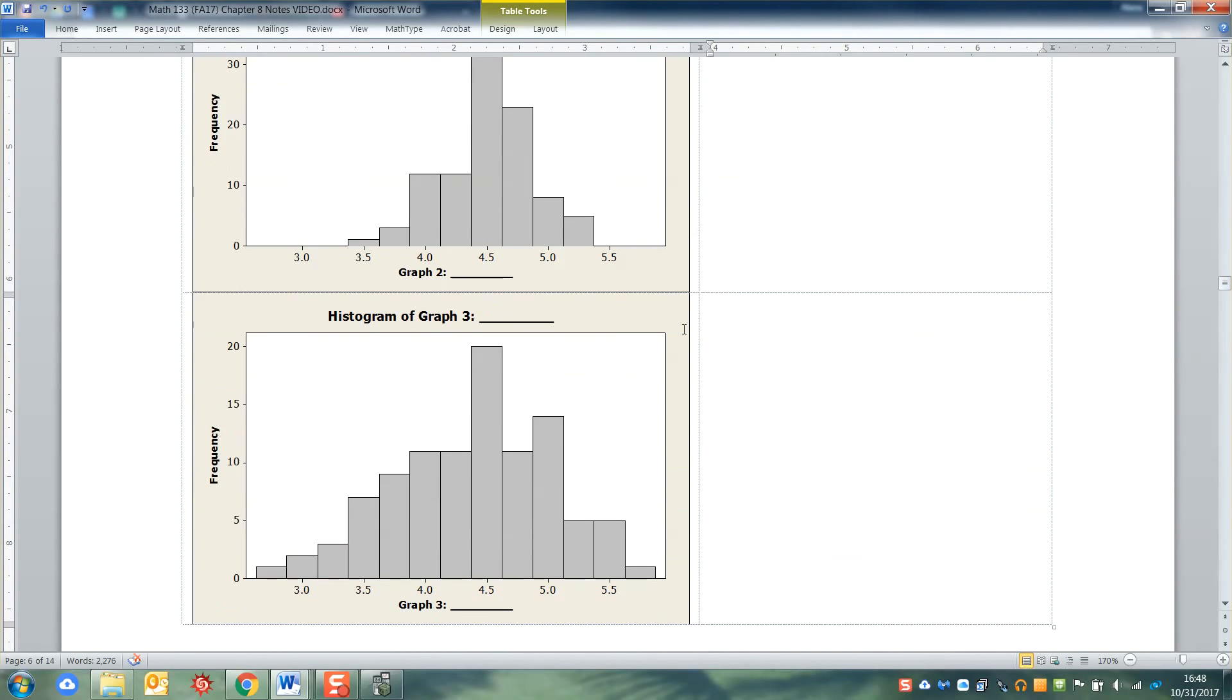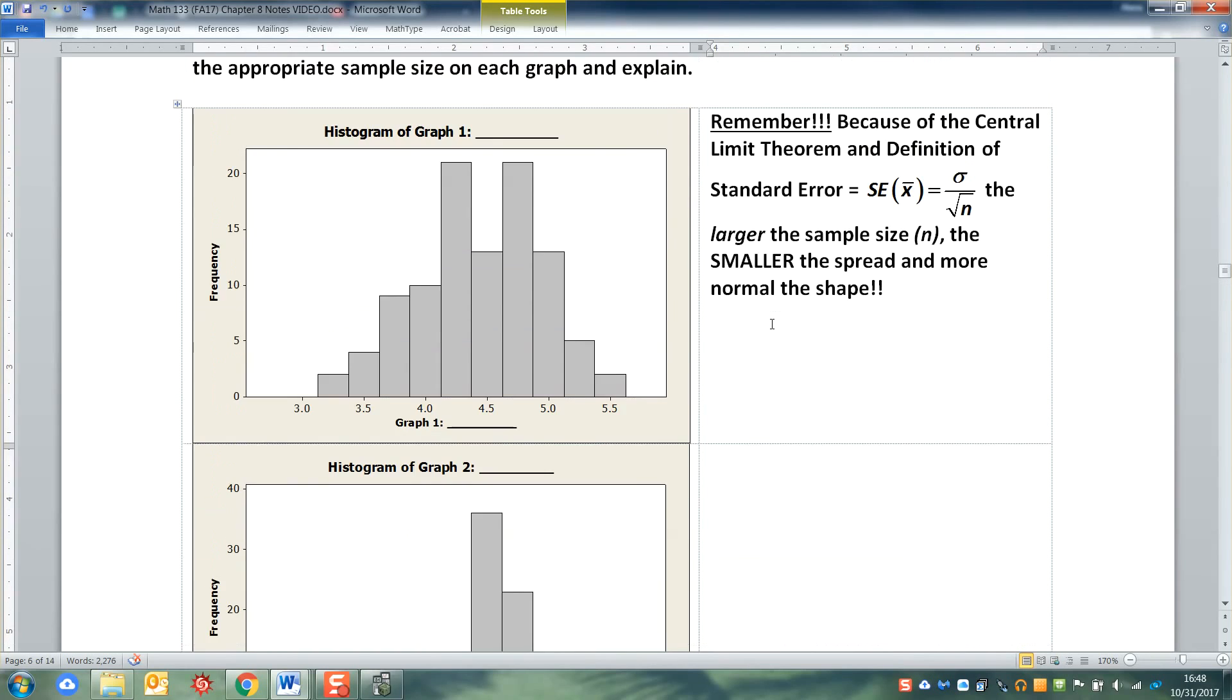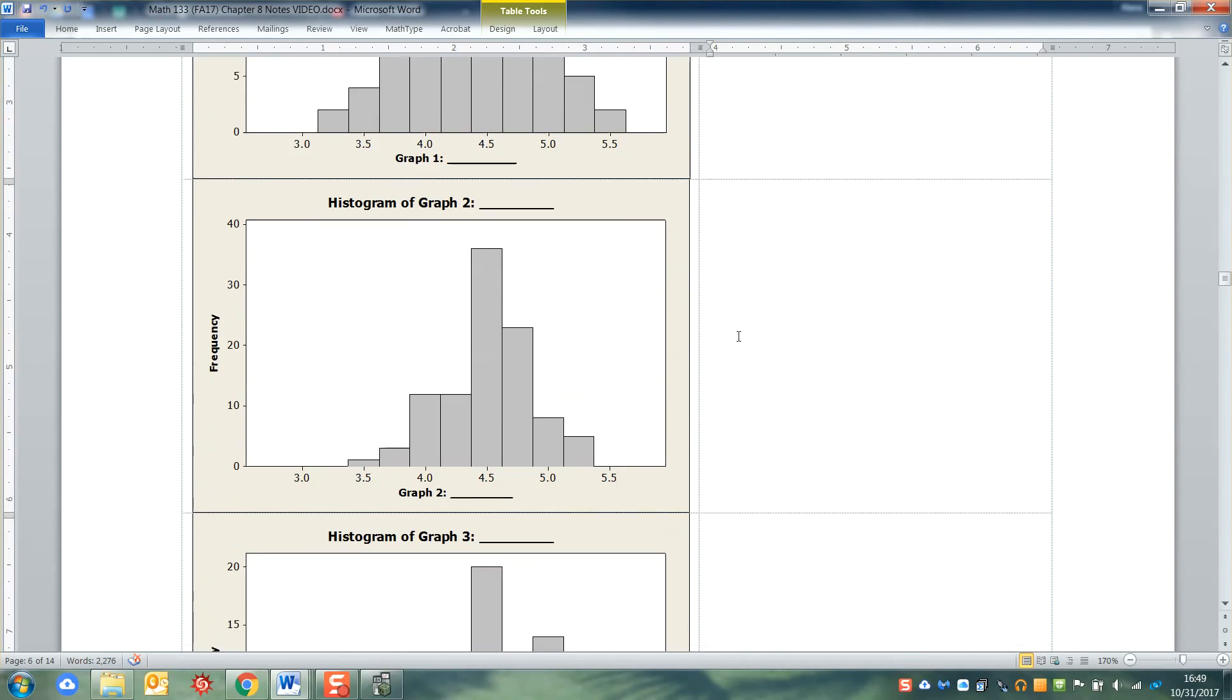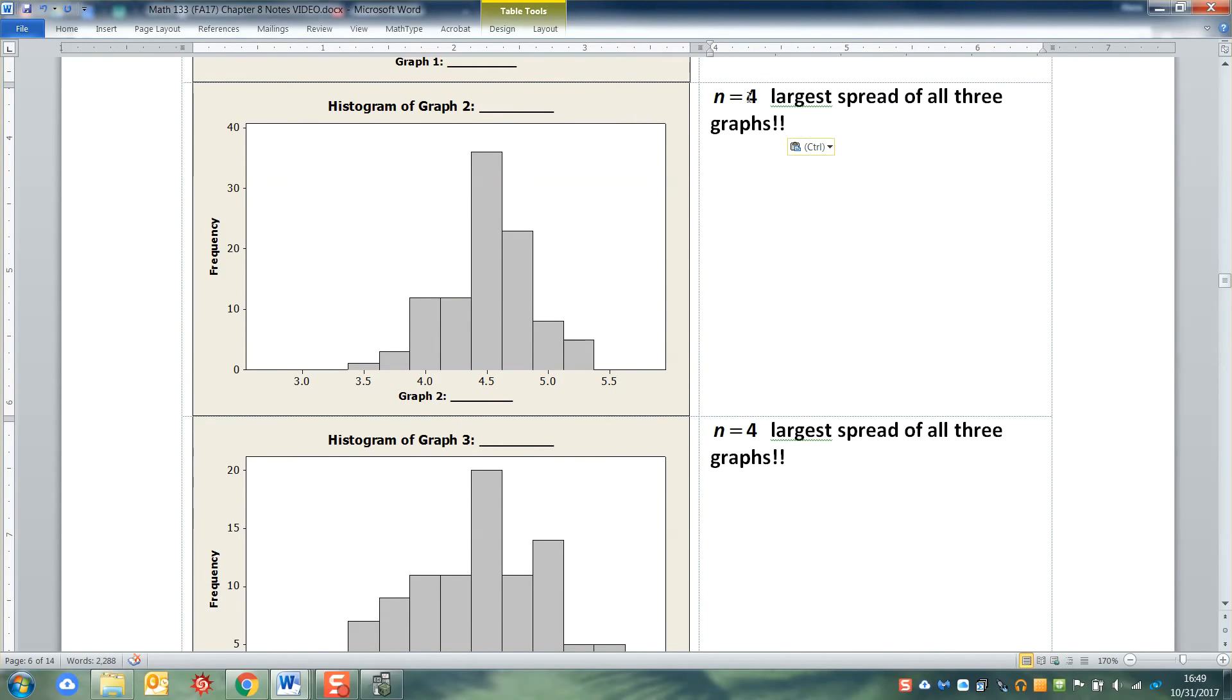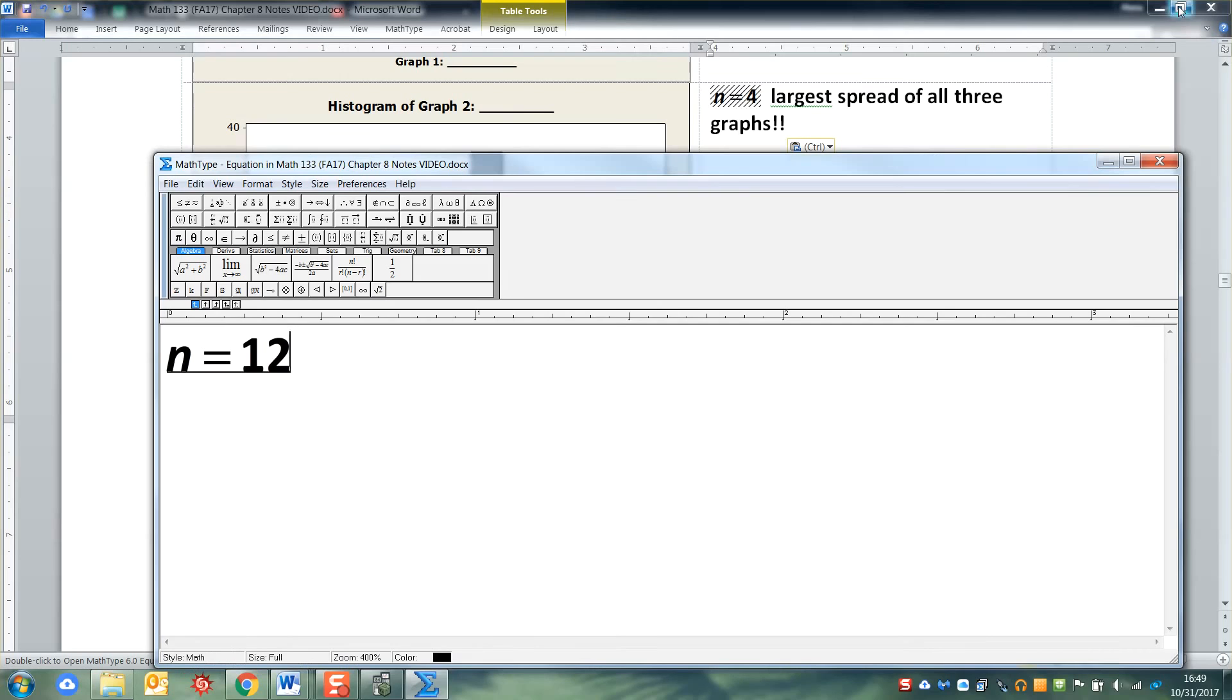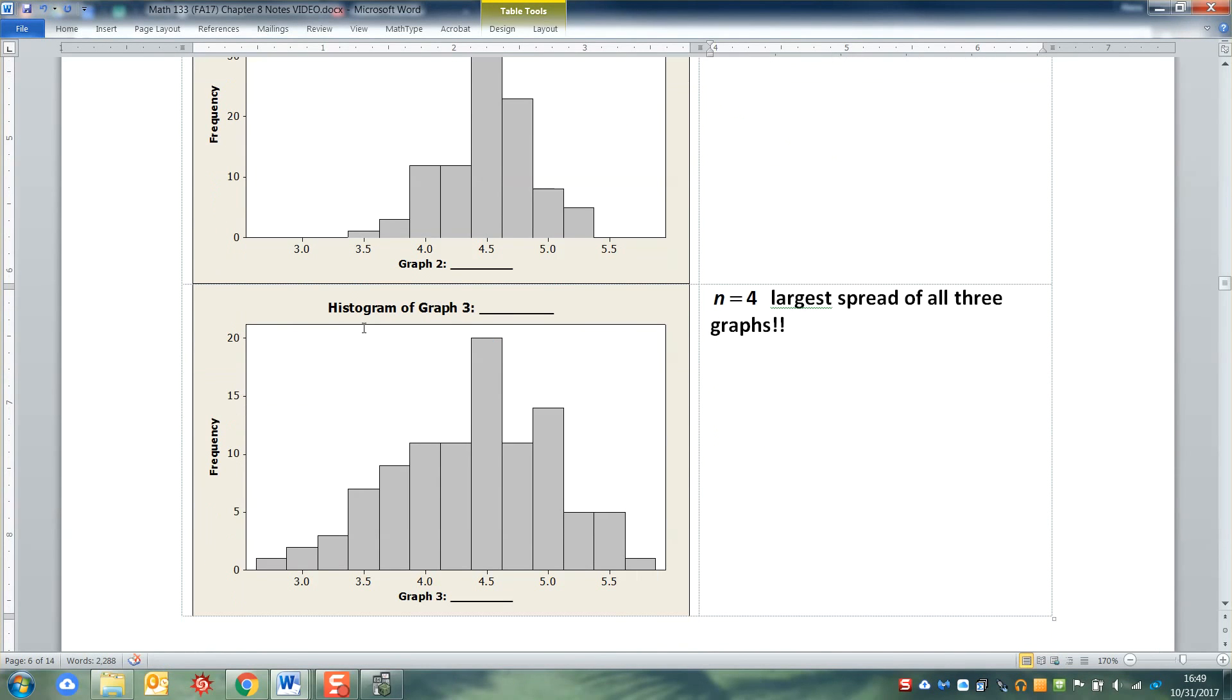Just remember, because of the Central Limit Theorem and the definition of standard error contained therein, namely the standard error is σ over the square root of n, the larger your sample size, the smaller your spread is going to be and the more normal your shape is going to be. So when you look at your graphs, you want to figure out which one's n = 4, which one's n = 8, and which one's n = 12. Well, the one with the largest spread, which is this one down here, this has got to be n = 4. And it's because it has the largest spread of all three graphs.